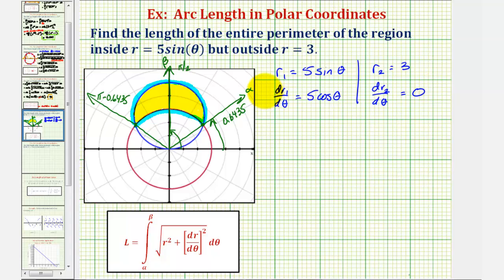Now we have all the information we need in order to find the entire perimeter. Let's call it p for perimeter. We'll have p equals two times the integral from 0.6435 to pi over two of the square root of r sub one squared.